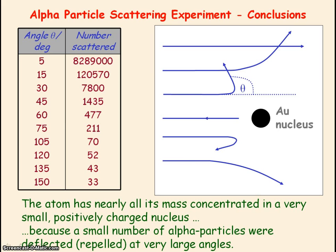Also, you had to use a thin foil of gold in order to reduce the number of layers of gold atoms the alpha particles pass through, which could distort the results of the deflecting angles.